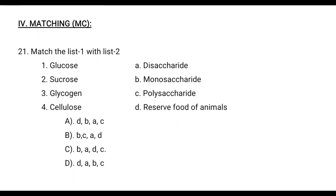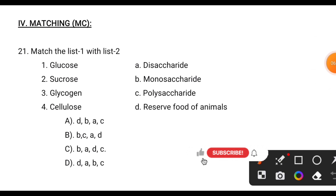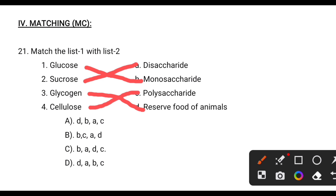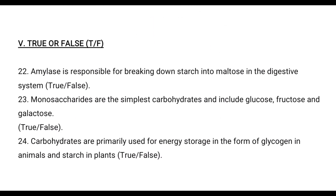Next category: matching type. Match List 1 with List 2 — carbohydrate molecules to their classification. Glucose is a monosaccharide. Sucrose is a disaccharide. Glycogen is a reserve food of animals. Cellulose is a polysaccharide present in plant cell walls. The correct answer is C.